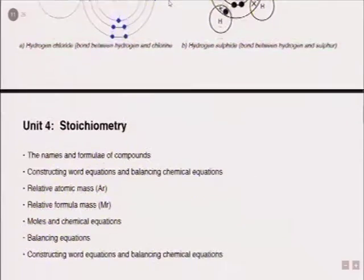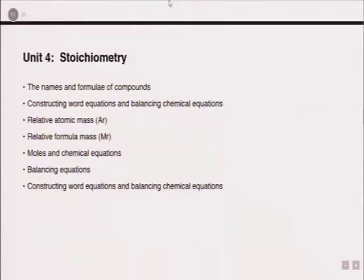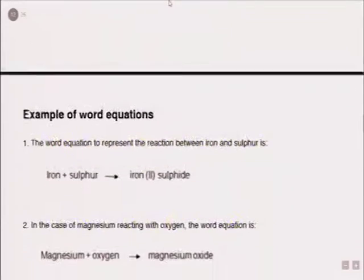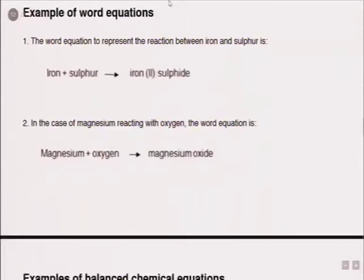When you look at sulfur and hydrogen, sulfur has six electrons in its outer shell, which means it needs two more electrons to be full. So it needs to react with two hydrogen atoms to achieve its full outer shell. That's why in example B, two hydrogen atoms are reacting with one sulfur atom. This is very important for you to understand because it is one of the critical aspects of your exam paper.